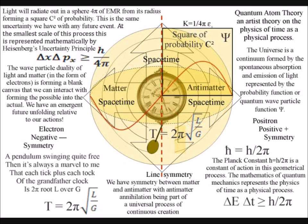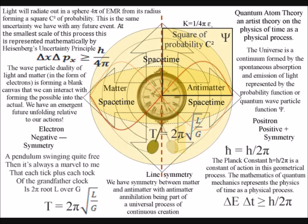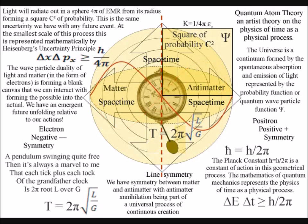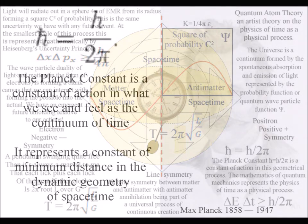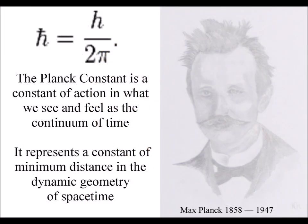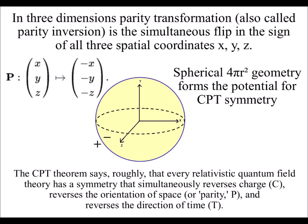This geometrical interpretation of quantum mechanics is supported by the fact that the Planck constant is also linked to 2 pi. When there is an exchange of energy in the form of photon-electron coupling or dipole moment, the energy levels cannot drop below the center of the sphere because the process is relative to the radius. This forms a minimum amount of energy — a constant of action in space and time — that we see mathematically as the Planck constant linked to 2 pi, representing the circumference of the sphere.